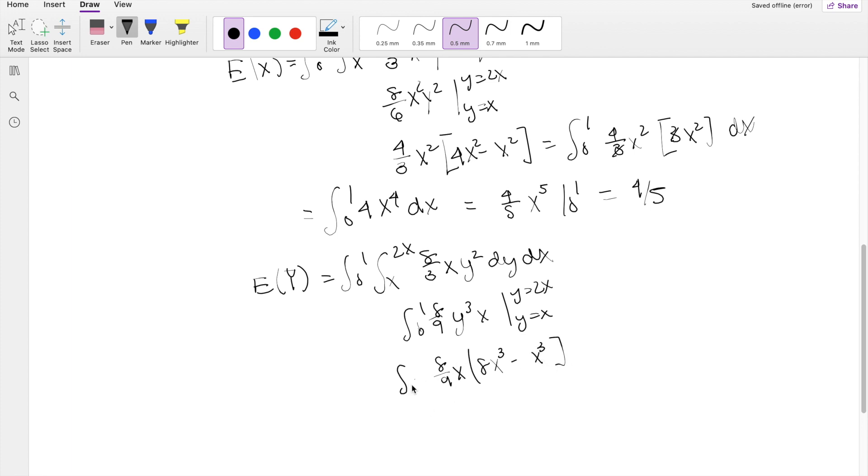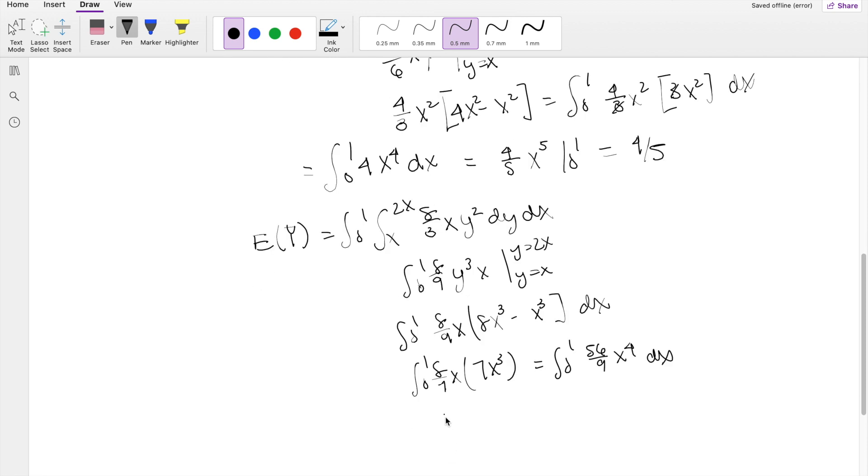Integrating, still integrating with respect to x, dx. So this is equal to 8 over 9 x times 7x cubed, integrating from 0 to 1. This is equal to 0 to 1, 56 over 9 x to the fourth dx. Finally, you get x to the fifth over 5, so 56 over 45, integrating from 0 to 1, you get 56 over 45.